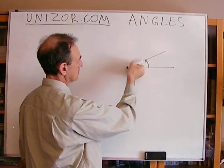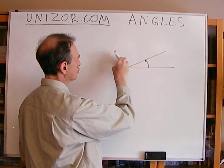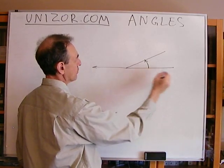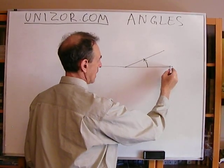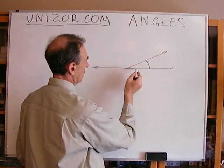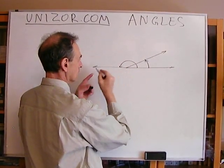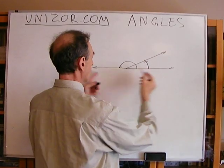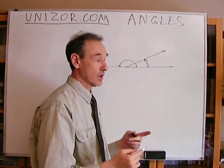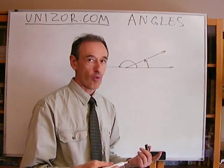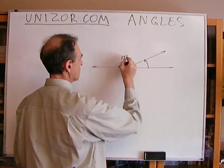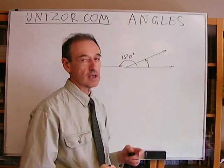Whenever this ray reaches the position which is the continuation of the first ray, so they actually make a straight line together, because each ray is half line. So if these two rays form one straight line, we are saying that this is an angle of 180 degrees.